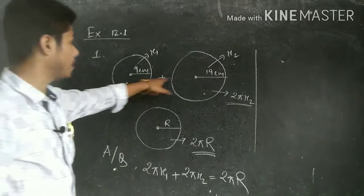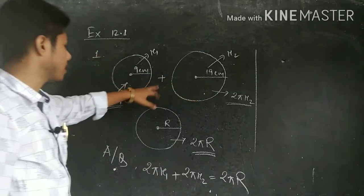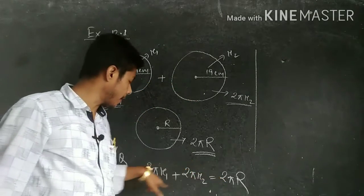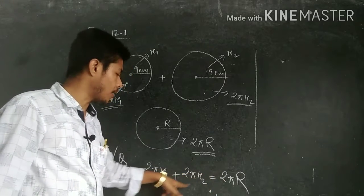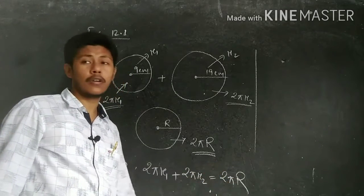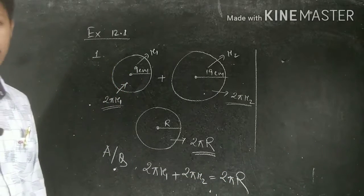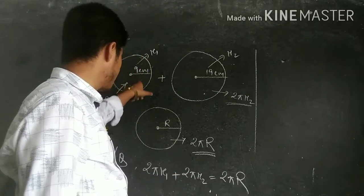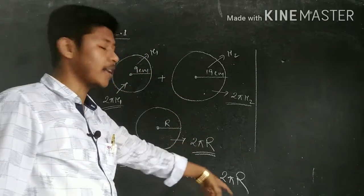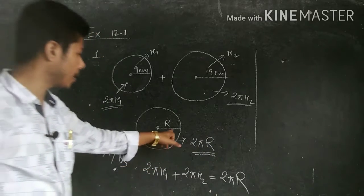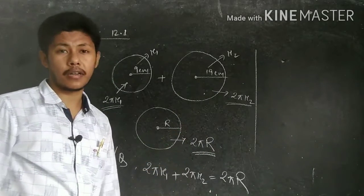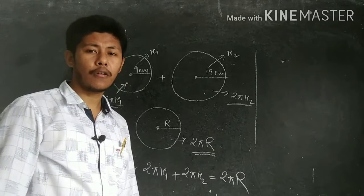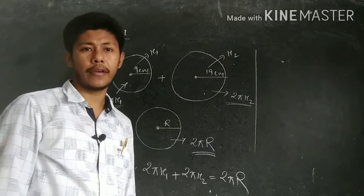Now, 2π is common and cancels from both sides, leaving r1 + r2 = r. So you just put the value of r1 as 9 cm and r2 as 19 cm, and from here you get the radius of the third circle. I think all of you understood this one.